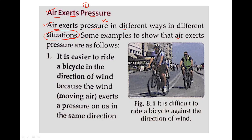First, it is easier to ride a bicycle in the direction of wind. If the air is moving in the same direction as the cyclist, it will be easy to ride the bicycle. The wind — which is moving air — exerts pressure, so you need less force and can easily ride it.